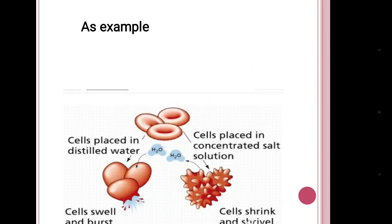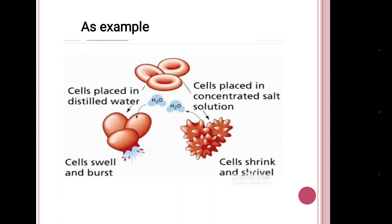As an example, if we put cells into distilled water — that is pure water — the water will get inside the cells and the cells will swell and burst. Again, if we place the cells in a concentrated solution, then the water will come out of the cells and the cells will shrink.